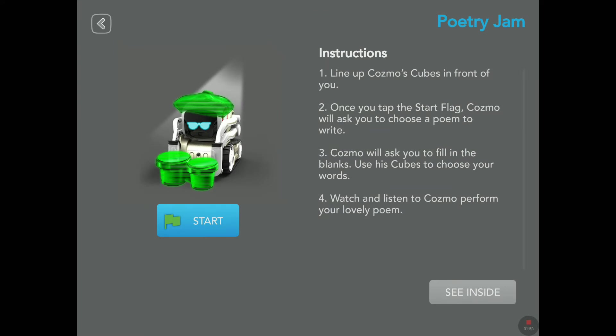Instructions: Line up Cosmo's cubes in front of you. Once you tap the start flag, Cosmo will ask you to choose a poem to write. Cosmo will ask you to fill in the blanks. Use these cubes to choose your words. Watch and listen to Cosmo perform your lovely poem. As always, just want to have a look at the inside code. We can always learn from the Anki coding, which is usually super great. So I'm going to tap on start and let's listen to what Cosmo has to say.